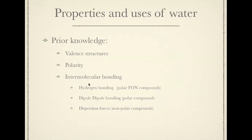You need to understand what hydrogen bonding means and how to identify something that has hydrogen bonding. You also need to understand dipole-dipole bonding and dispersion forces and where these occur. Hydrogen bonding occurs between polar molecules which have F, O, or N — fluorine, oxygen, or nitrogen — attached to a hydrogen atom. That's where you have hydrogen bonding.